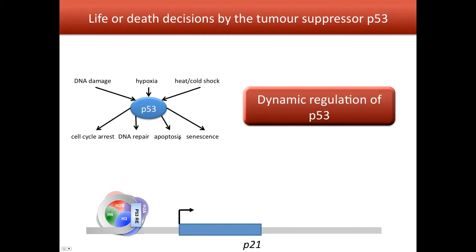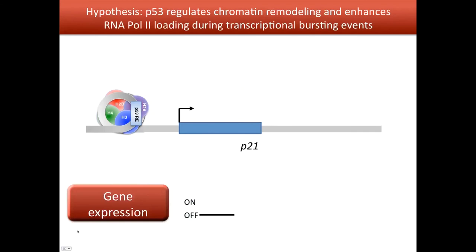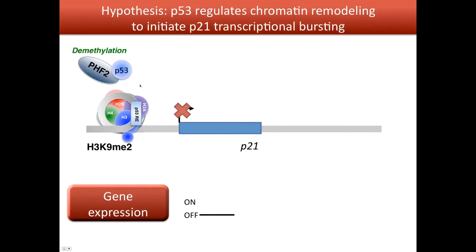To study how p53 interacts, we built some hypotheses. We know that when the chromatin is off and there is no transcription, the histones are typically methylated — specifically on H3K9. If we assume the histones are methylated on H3K9 and the cell needs to activate p21, we know that p53 can bind to demethylase enzymes such as PHF2. Perhaps p53 aids the recruitment of the PHF2 enzyme to the p21 promoter, leading to demethylation of the nucleosome.